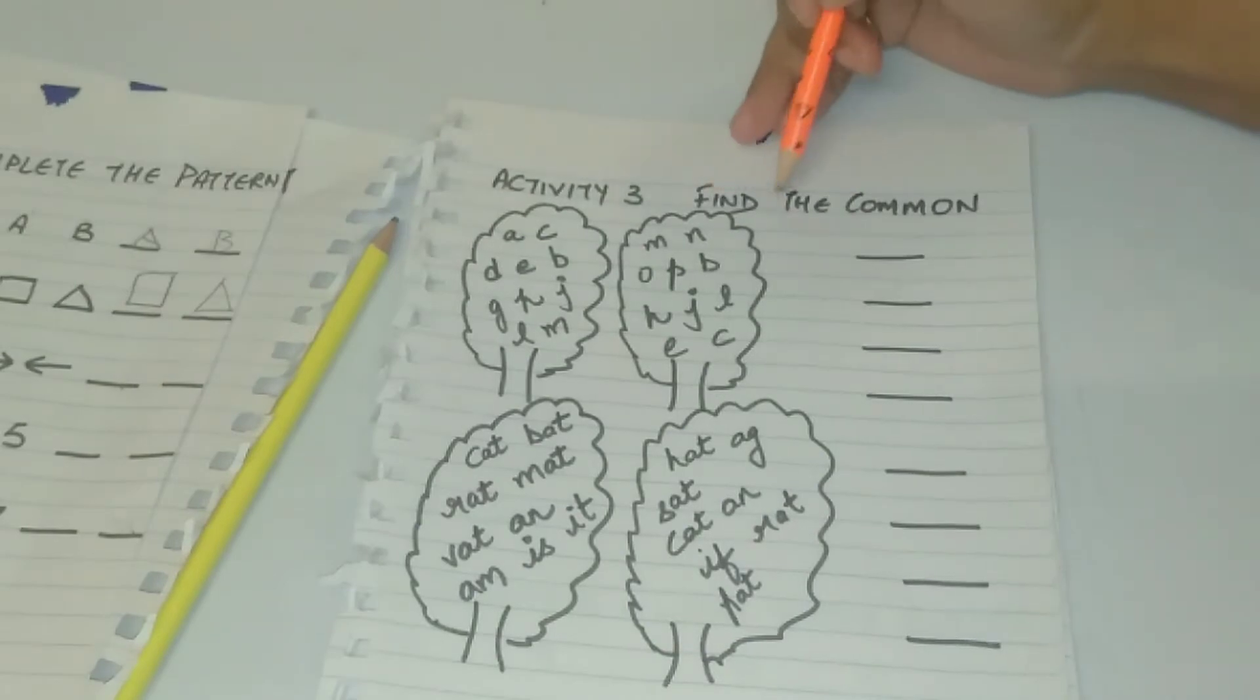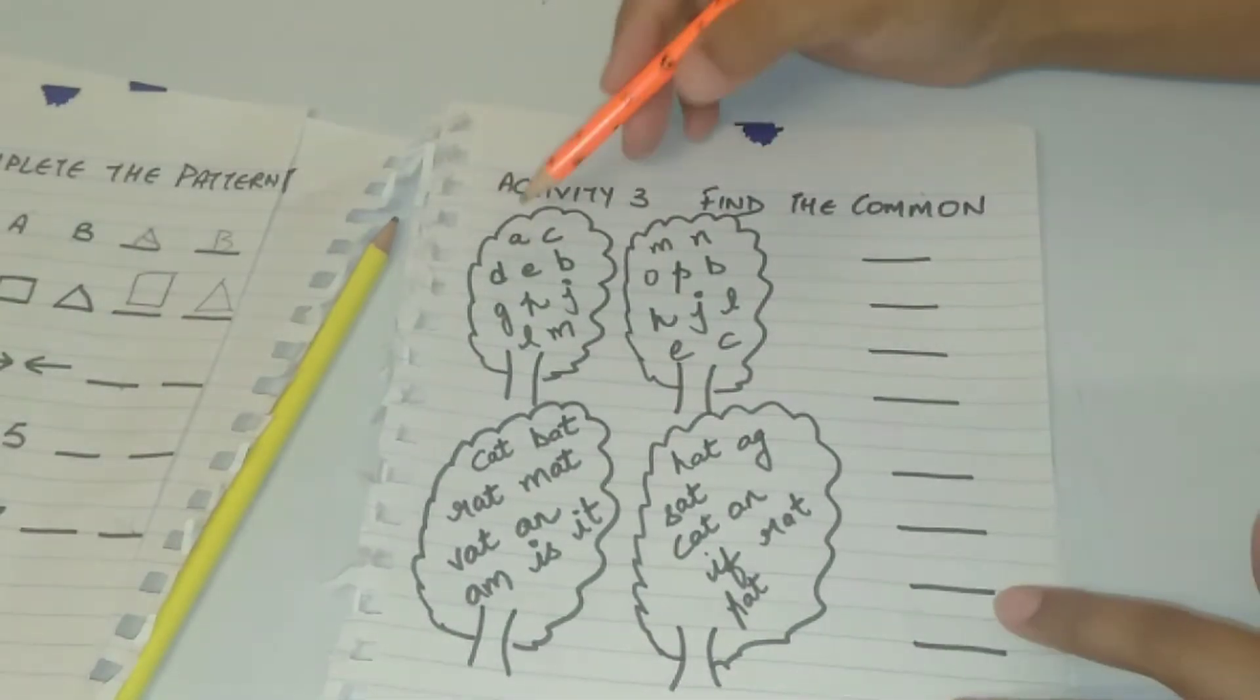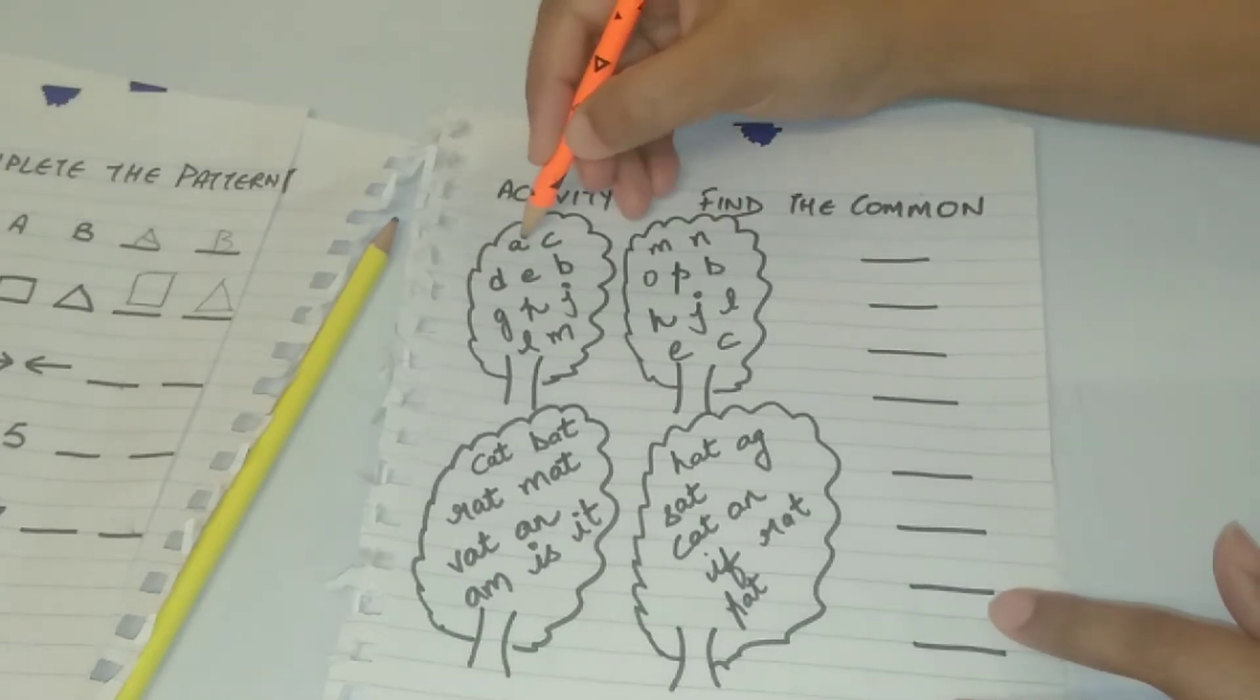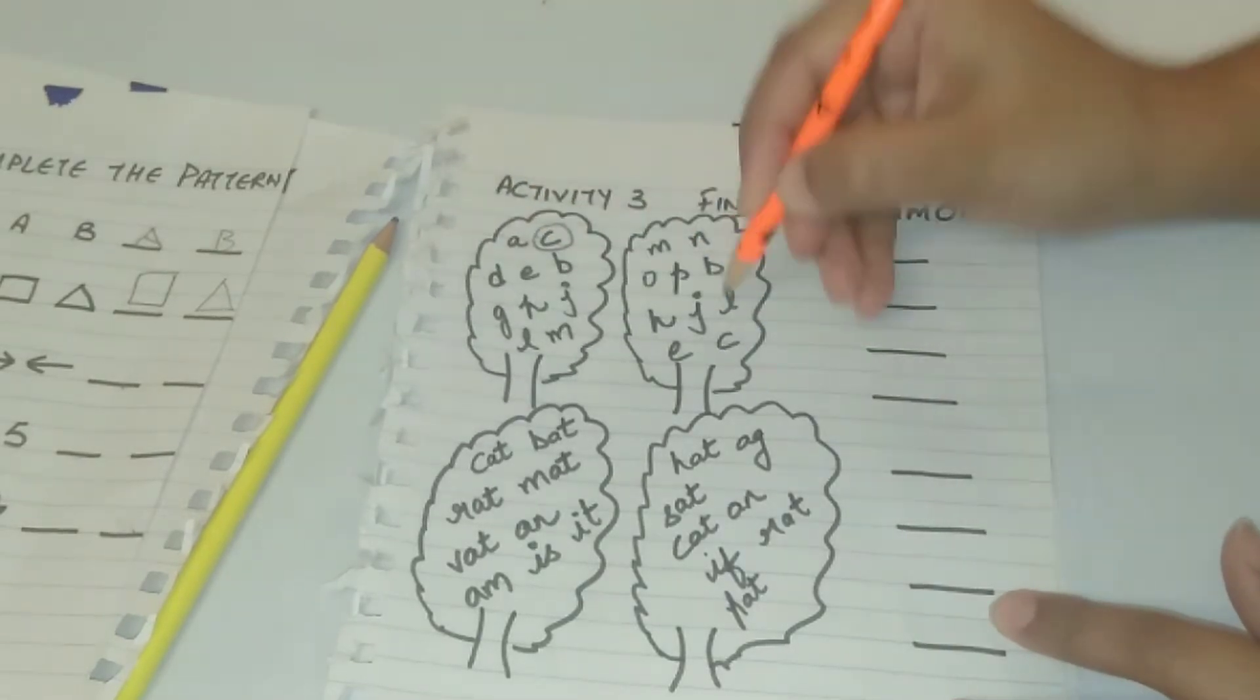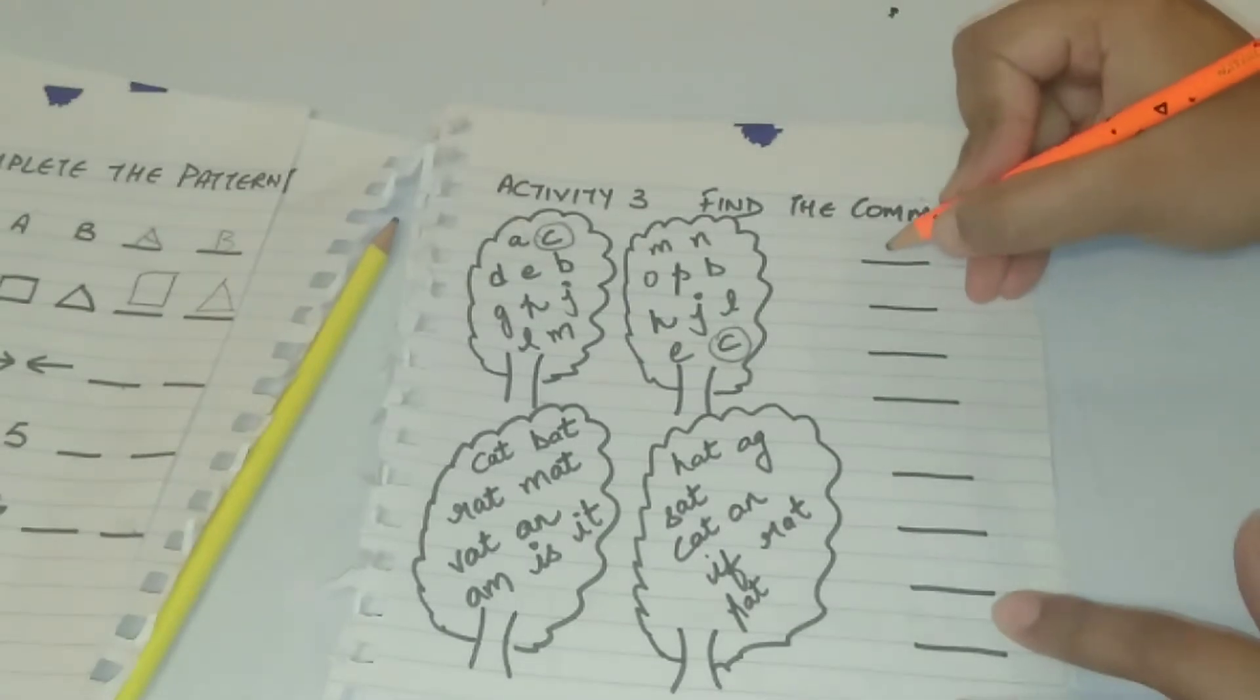This activity is very interesting. It's find the common. I have made two trees and I have put few alphabets which are common in both the trees and the kid has to see which alphabets are common. C is common in both the trees and the answer will be C.